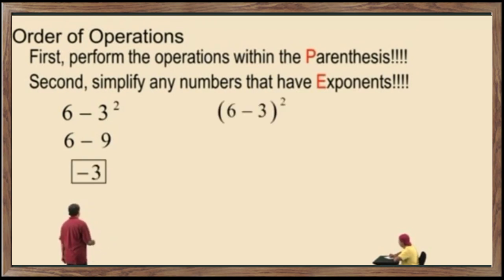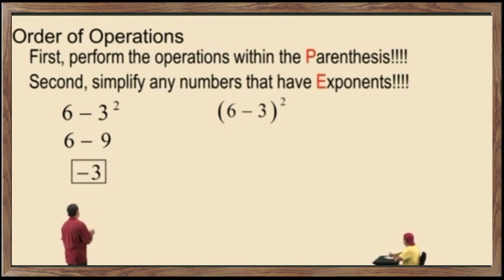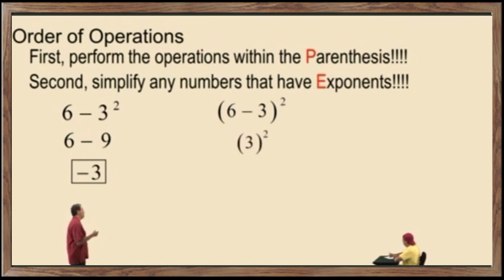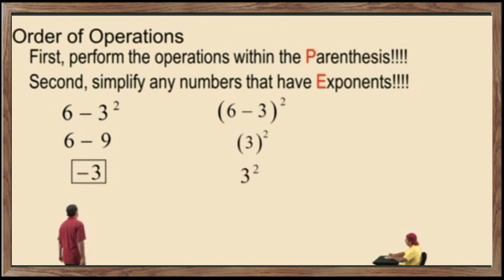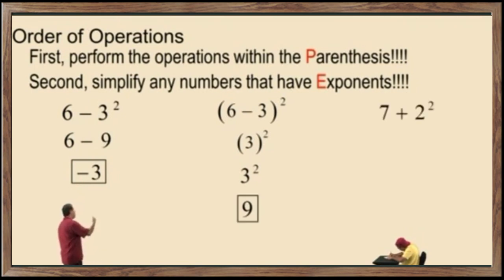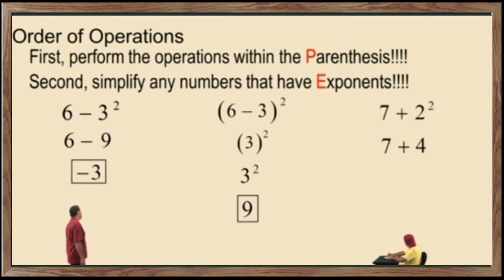Here we have 6 subtract 3 raised to the second power, and we have parentheses. So before we evaluate the exponent, we have to simplify the expression within the parentheses. 6 subtract 3 is 3. We have a positive 3 squared, so the parentheses are not required. 3 squared is 3 times 3, which is 9. Next: 7 plus 2 squared. 2 squared is 4. Bring down your work. 7 plus 4 is 11.